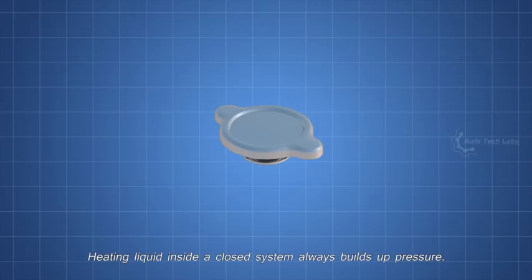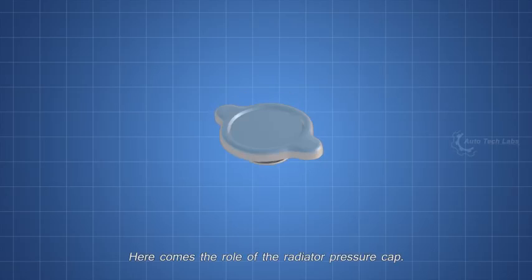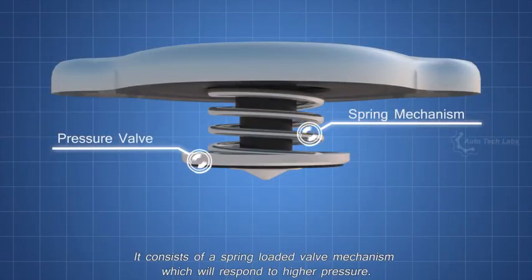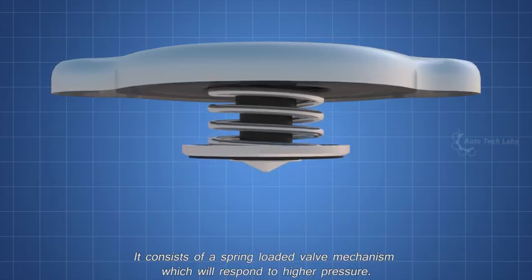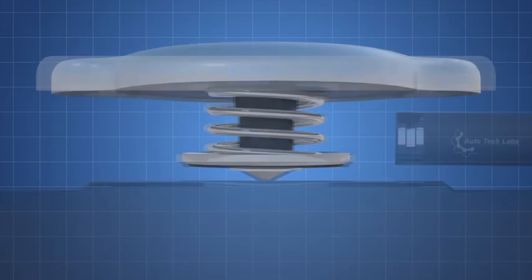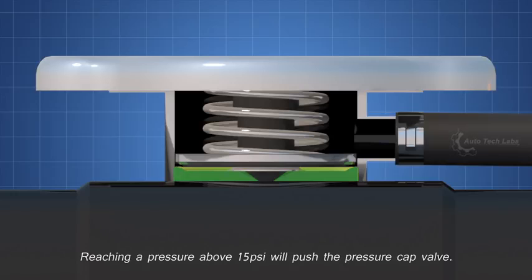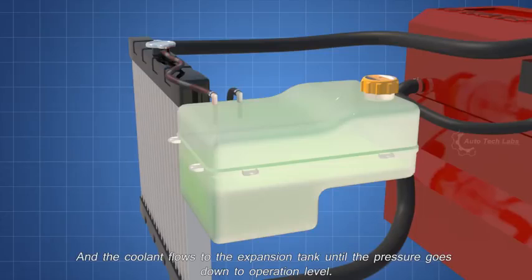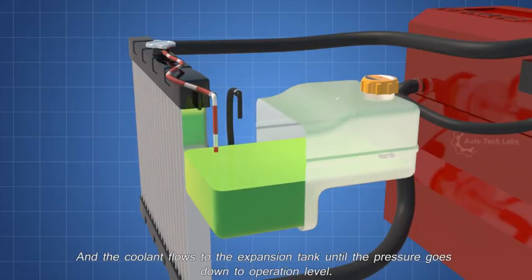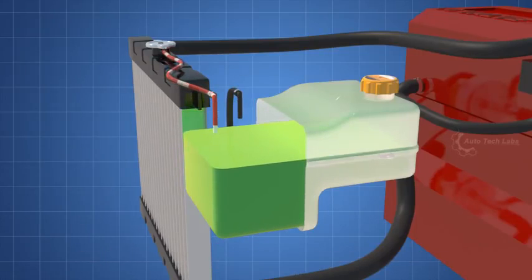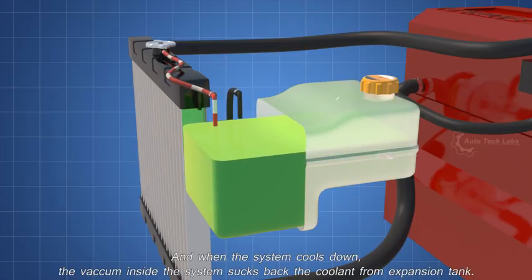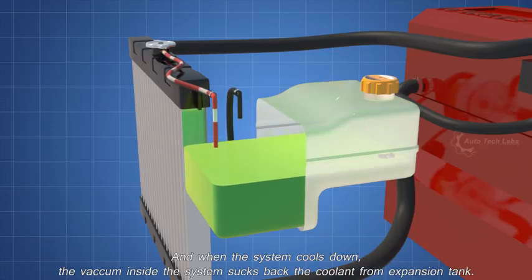Heating liquid inside a closed system always builds up pressure. So how to maintain the pressure? Here comes the role of the radiator pressure cap. It consists of a spring-loaded valve mechanism which will respond to higher pressure. Reaching a pressure above 15 PSI will push the pressure cap valve, and the coolant flows to the expansion tank until the pressure goes down to operation level. And when the system cools down, the vacuum inside the system sucks back the coolant from expansion tank.